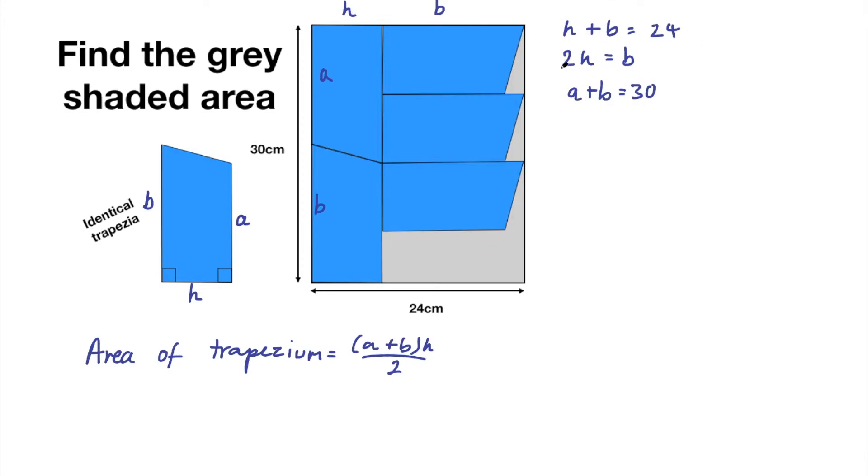Okay so where can we start? Well if 2h equals b plug that into the first equation here. So then we could say h plus 2h equals 24. So I could to make this really clear I could label these equation 1, equation 2 and equation 3 and I have substituted equation 2 into equation 1 to get this one and then 3h equals 24 and h equals 8 centimeters.